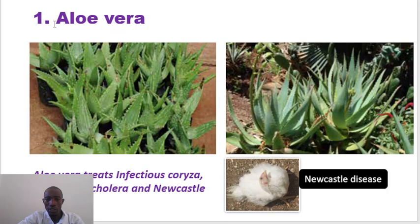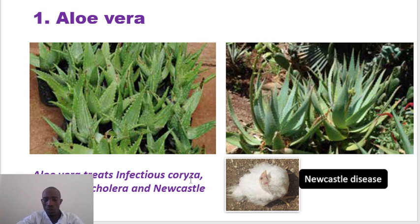The first plant that is commonly used is Aloe Vera, and this is one plant that is within various homesteads — they cultivate it within buckets or within polythene bags. It's used to treat various diseases; for example, we have infectious scoza, which is a bacterial disease. The signs you will see are swollen eyes or the heads are swollen. This is caused by mycoplasma. We also have mites infestation, which is also treated using Aloe Vera.